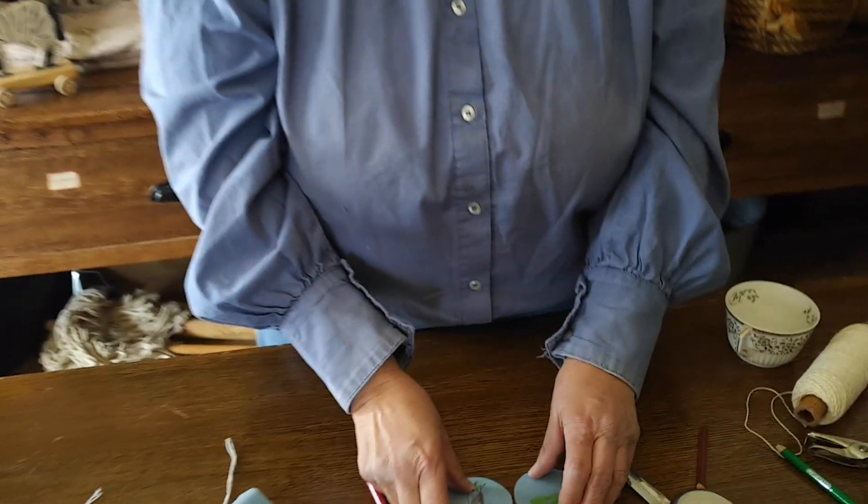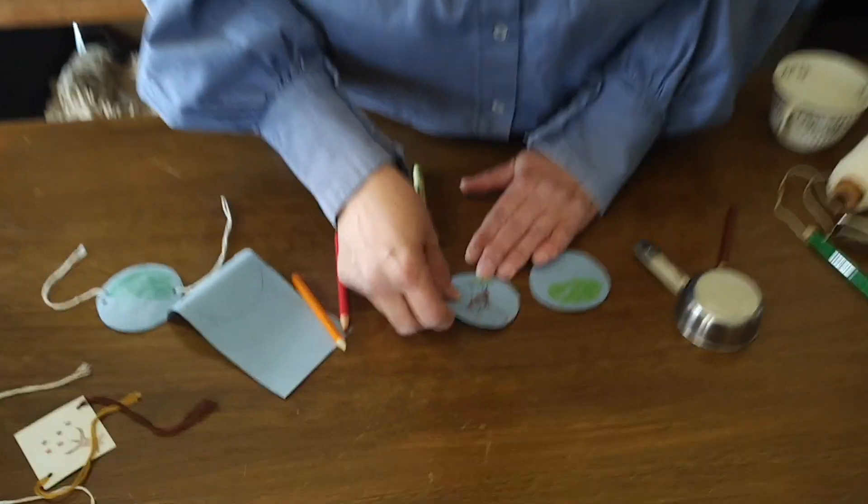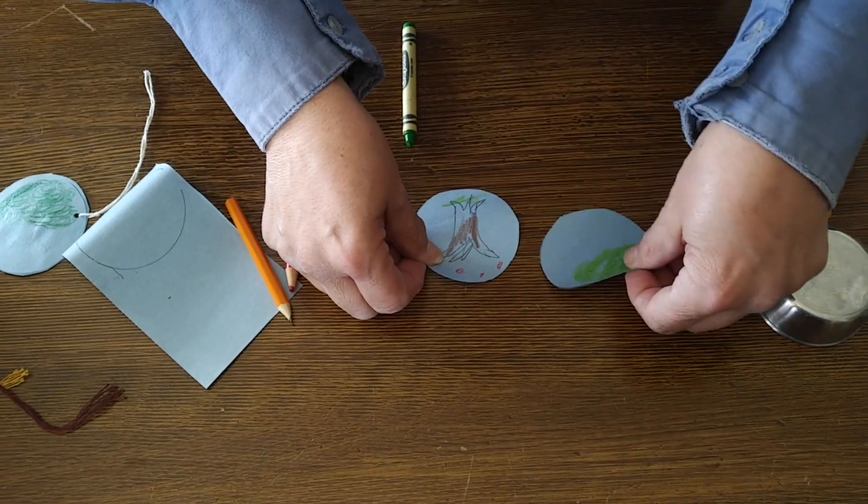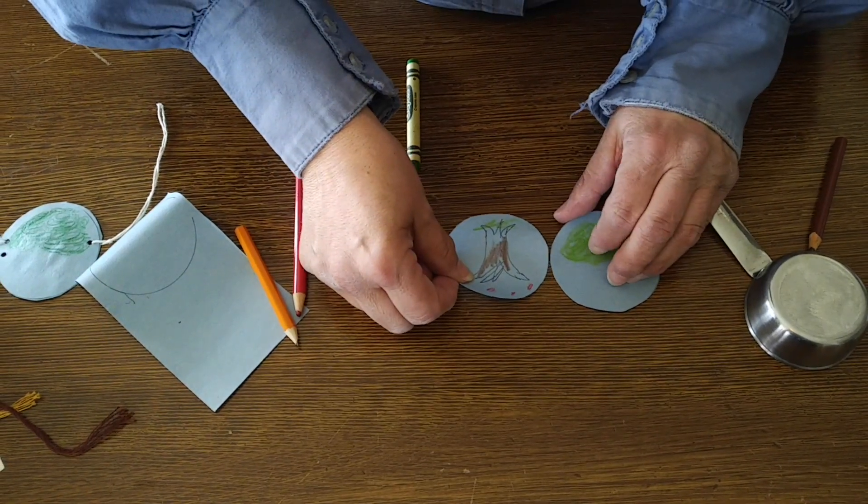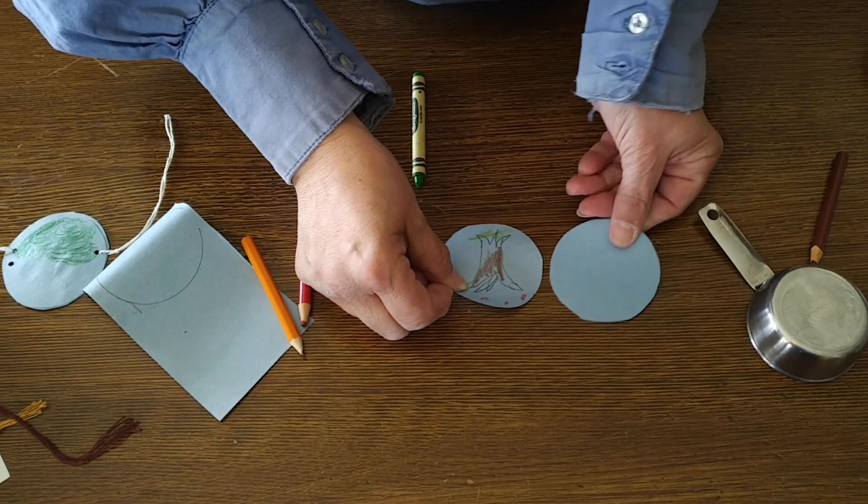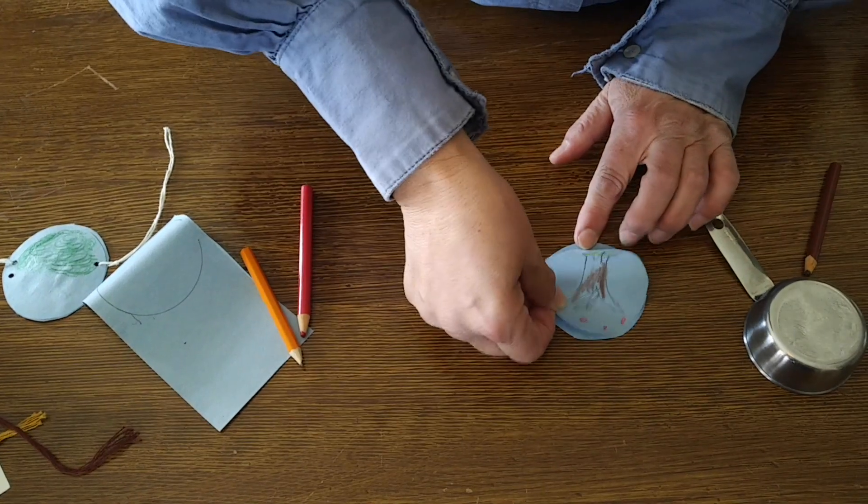Now here comes the tricky part. When I put this together, I have to do it opposite. I have to put the tree here and the leaves down here when I glue it together. So I'm going to keep this this way. I'm going to turn it over and put it like that.